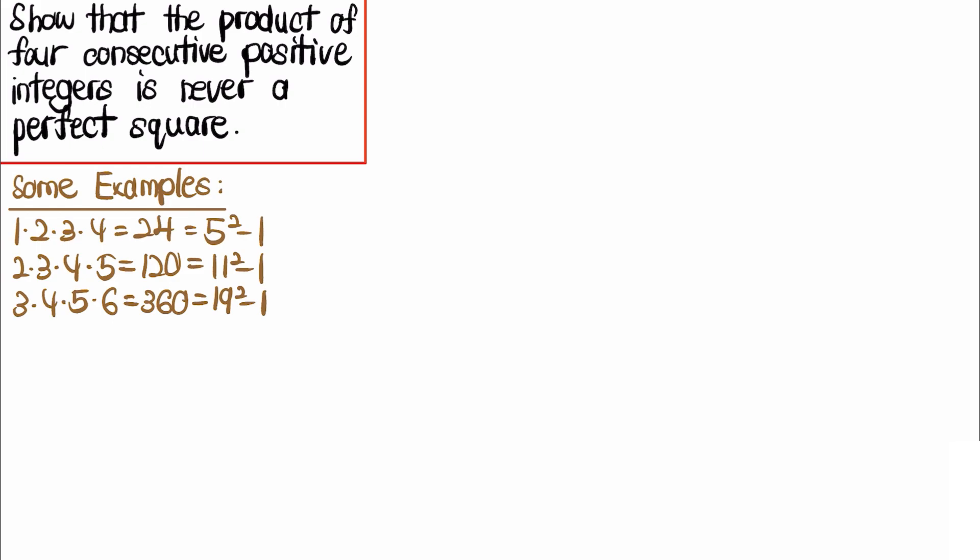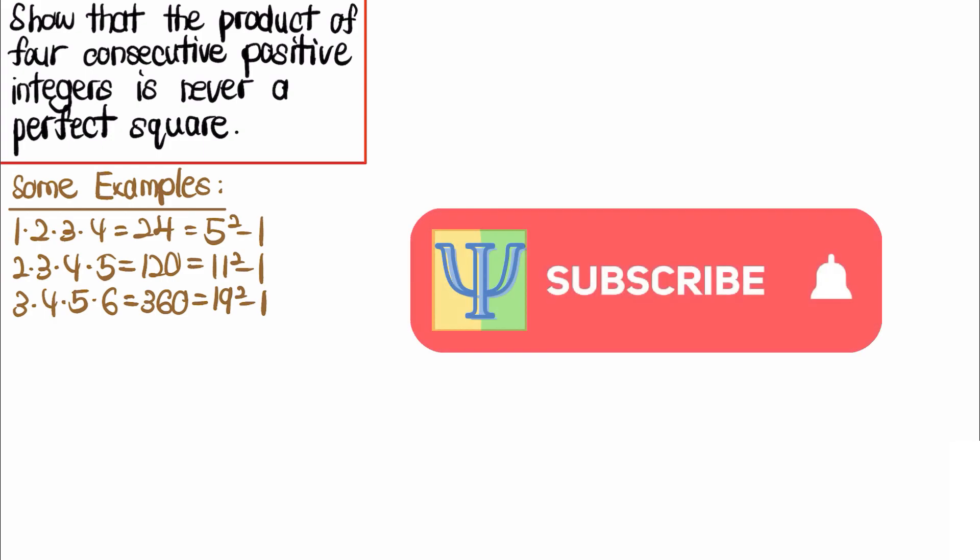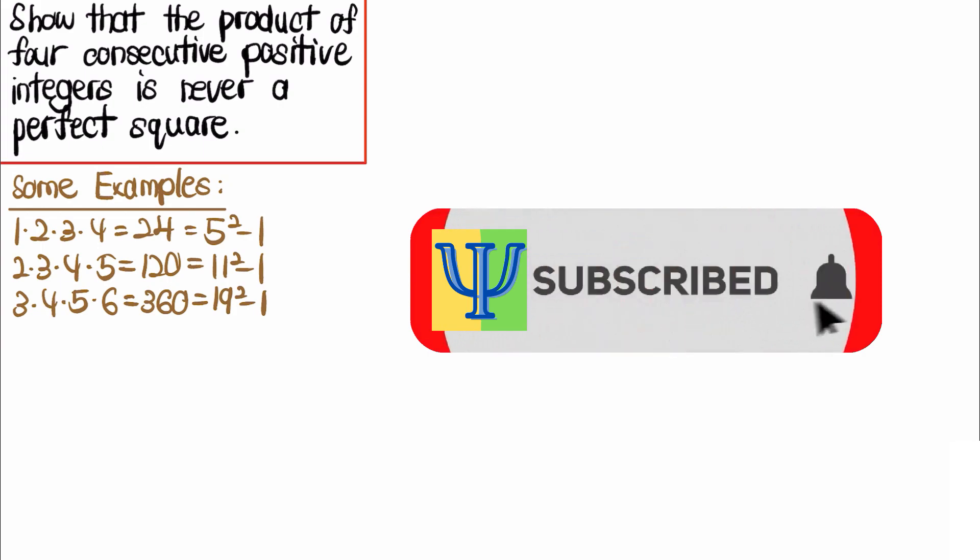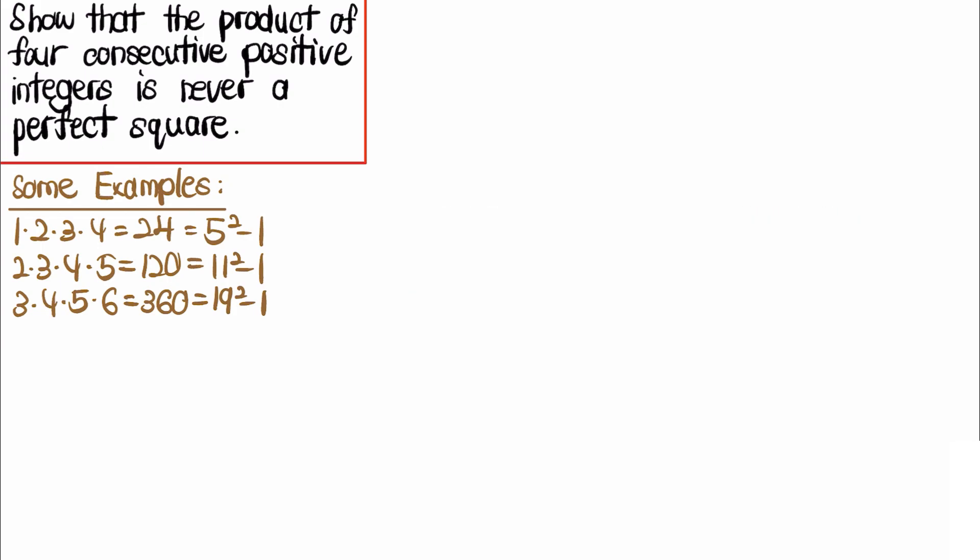In particular, if you look closely, you can figure out that 24 = 5² - 1, and 120 = 11² - 1, and 360 = 19² - 1. This gives us a hint that we can actually show that the product of four consecutive positive integers is one less than a perfect square.